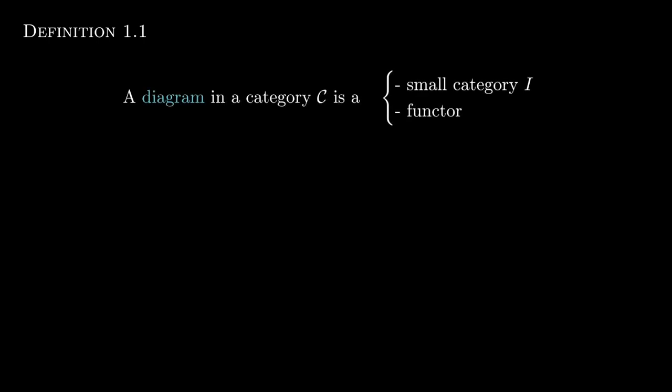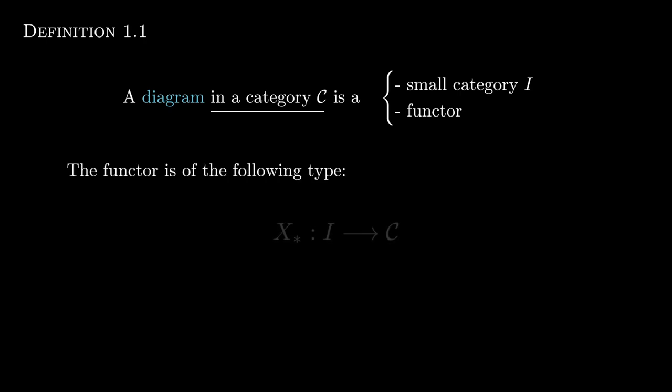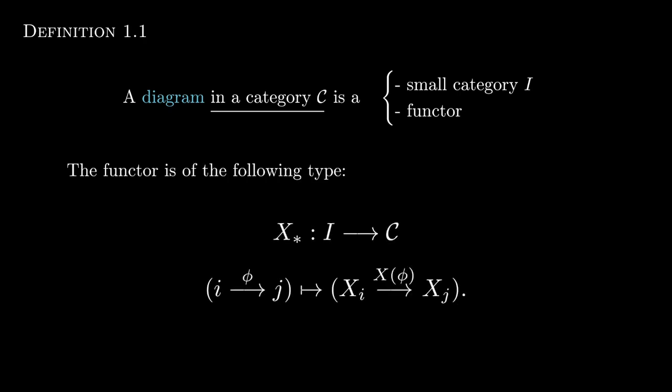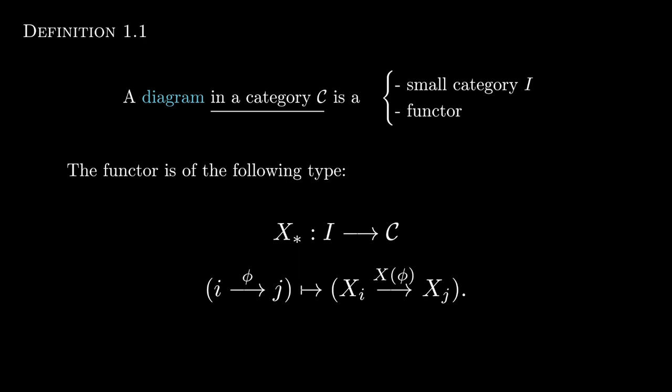We'll start off with what may be a review of some categorical definitions. When working with such definitions, it's useful to think about what type of information is actually contained in them. A diagram in a category has two pieces of information: that of a small category I, and that of a functor. You should think of the category I as a sort of indexing set — like a finite set or the set of integers — indexing morphisms in the category C in which the diagram lives. So if it were the finite category {1, 2, 3}, you might have maps from x1 to x2, x2 to x3, and x1 to x3.